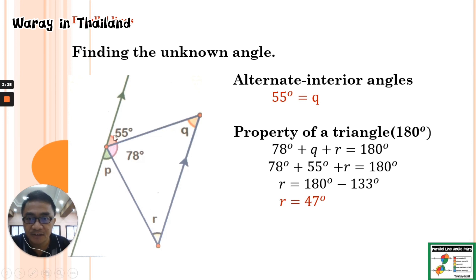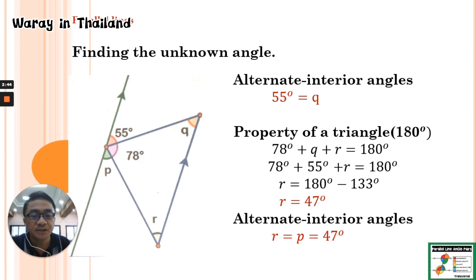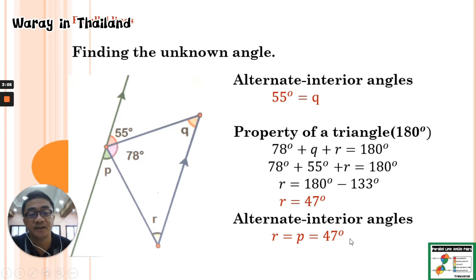For angle P, we can use the straight angle — since we have angles of 55, 78, and angle P — or we can use the alternate interior angle, since we already know angle R. Using alternate interior angles with this transversal line, angle P equals angle R. Using the straight angle, all three sum to 180 degrees, giving angle P equal to 47 degrees.